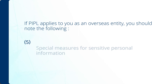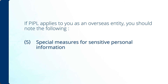Special measures should be taken in dealing with sensitive personal information of PRC individuals. Examples of sensitive personal information are biometric data, religious belief, medical and financial information, etc. And information of minors under the age of 14 is also considered sensitive information.